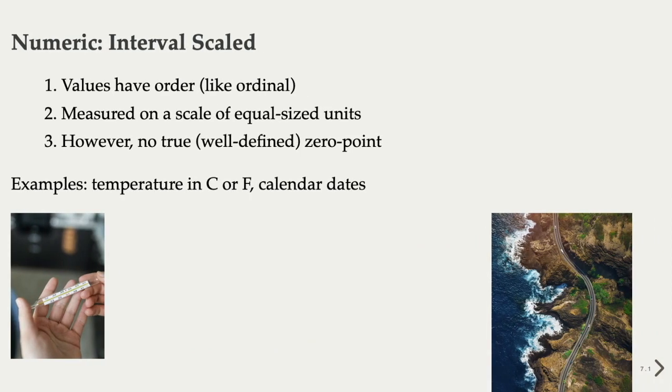An interval scale variable is one that is measured on a scale of equal size units. Values can be compared, and data can be ranked in an order. In addition, one can subtract one value from another to calculate the difference. A temperature in Celsius or Fahrenheit is interval scaled. We can say that today's temperature is 2 degrees warmer than that of yesterday.